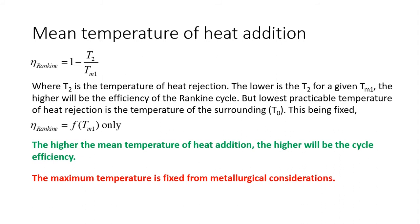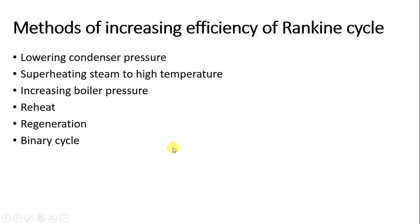The methods of increasing Rankine cycle efficiency — all focused on increasing the mean temperature of heat addition — are: (1) lowering condenser pressure, (2) superheating steam to a high temperature, (3) increasing the boiler pressure, (4) reheating, (5) regeneration, and (6) binary cycle. We will cover up to regeneration in this lecture, with most numericals focused on Rankine cycle and reheat.